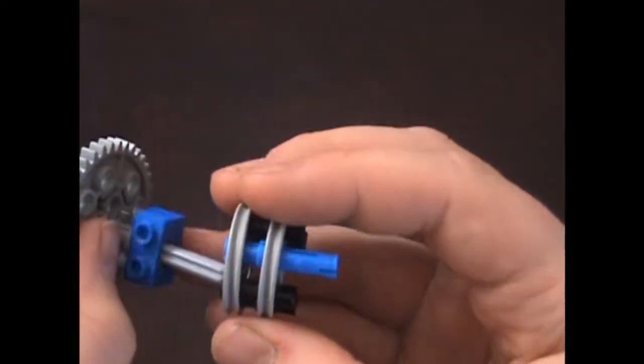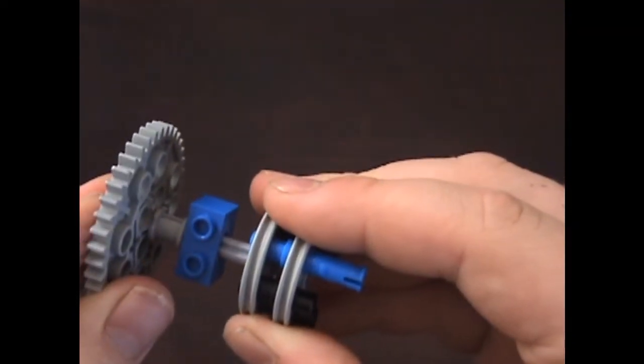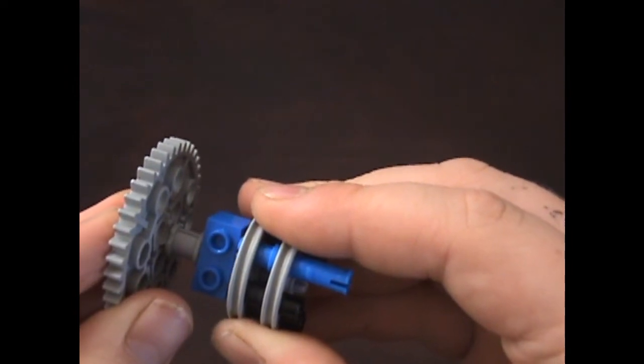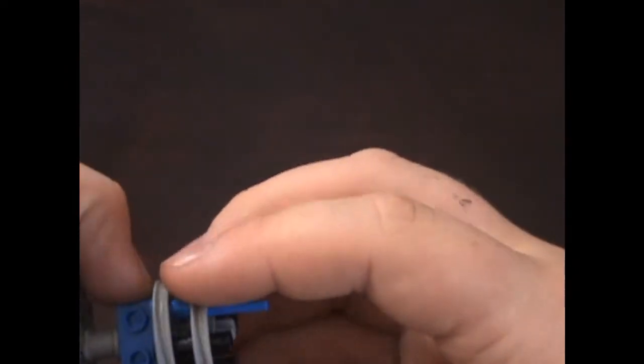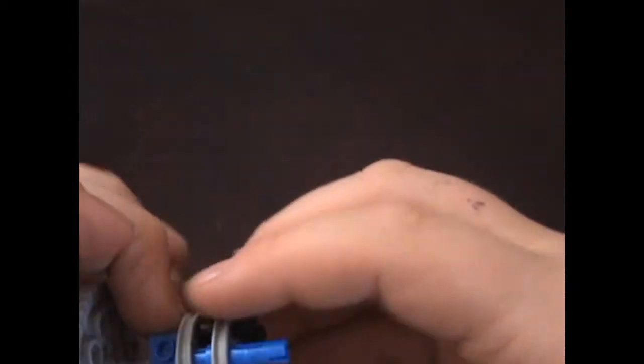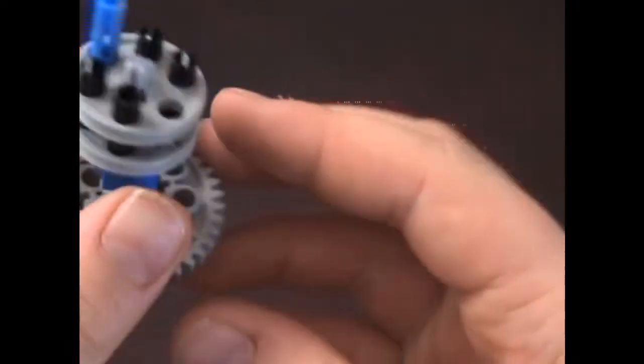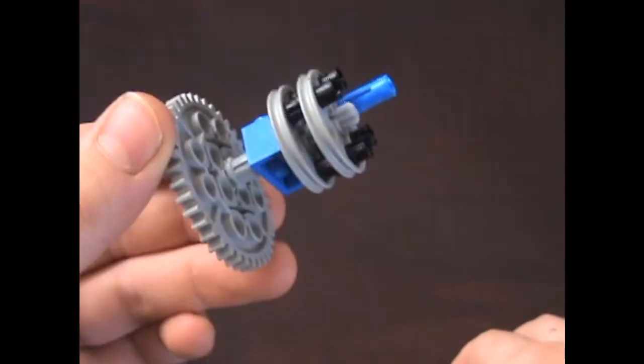And then, stick it on to the axle. Do it slowly and make sure that all the pieces are in place. Make sure that it can move a little freely with a little bit of catch. Now, that's your second component.